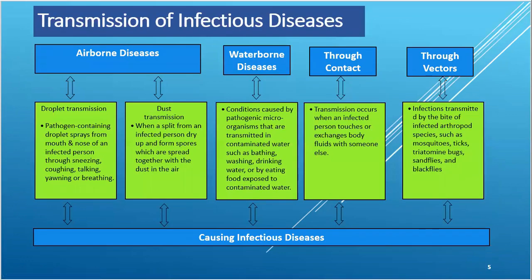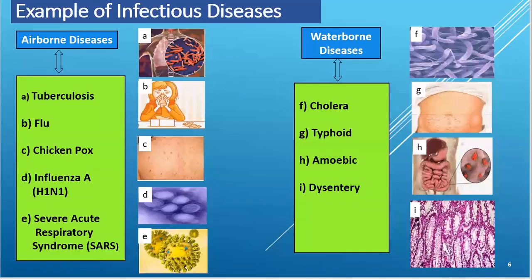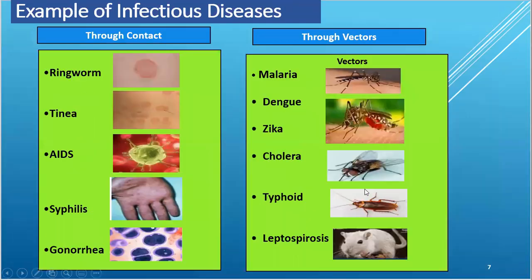There are four ways to transmit infectious diseases: through airborne, waterborne, contact, and vectors. Here are examples of infectious diseases caused by each of these transmission routes — airborne, waterborne, through contact, and through vectors.